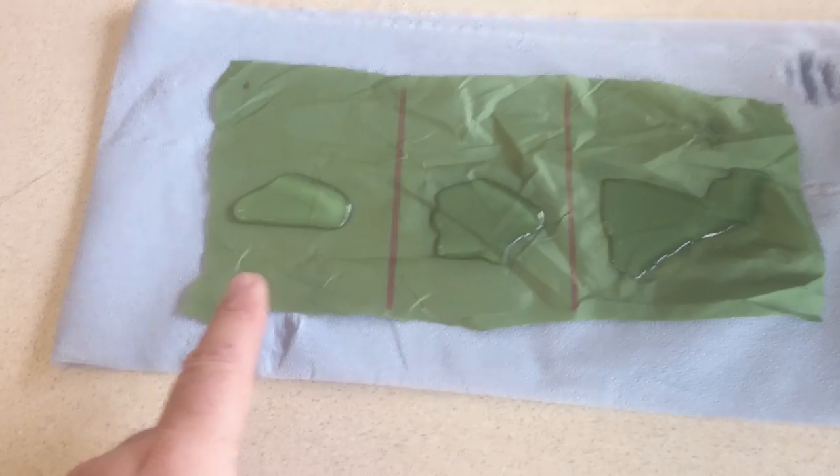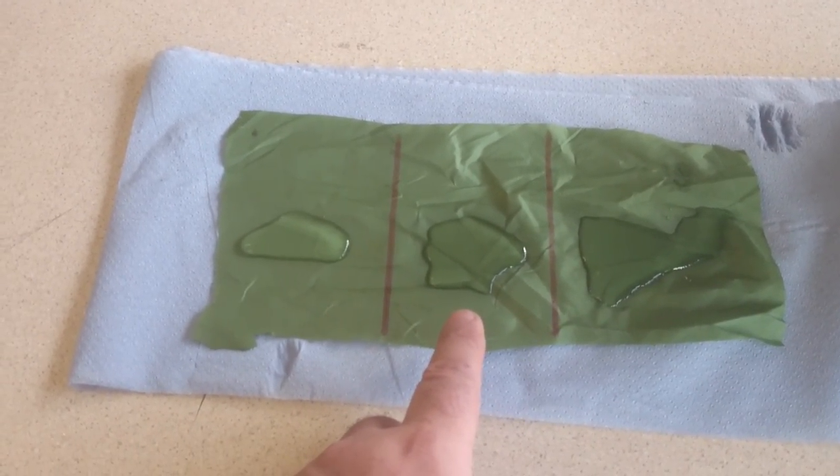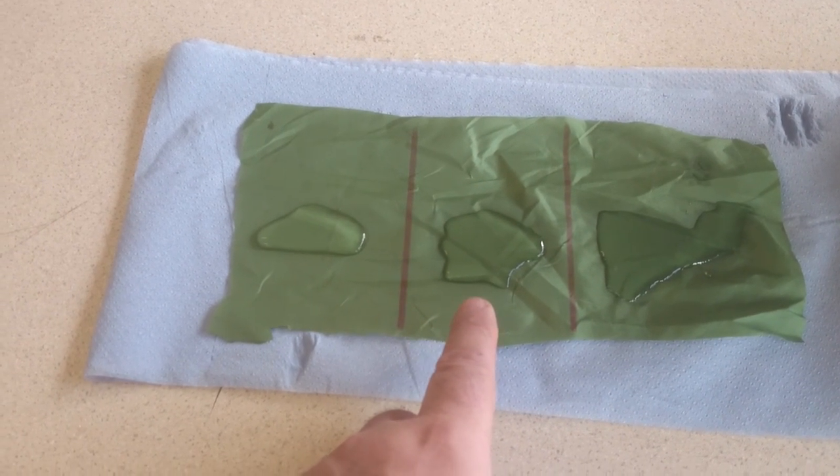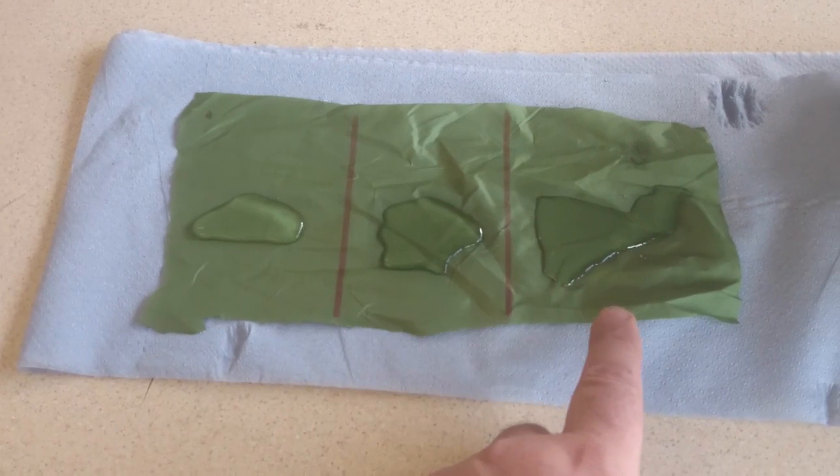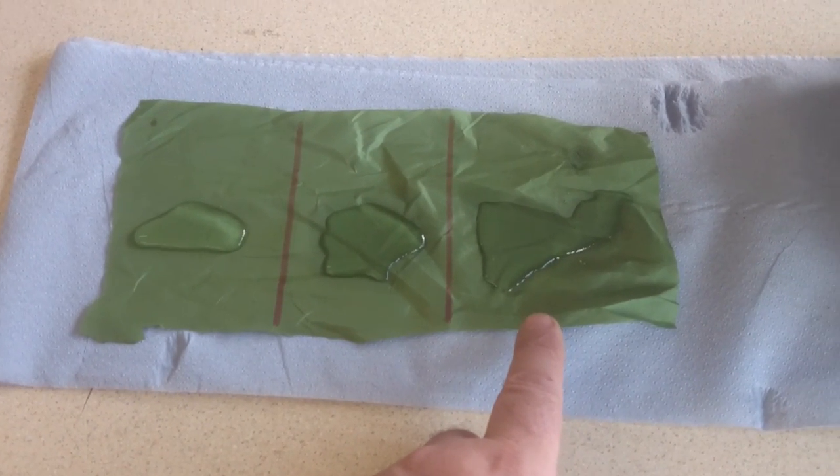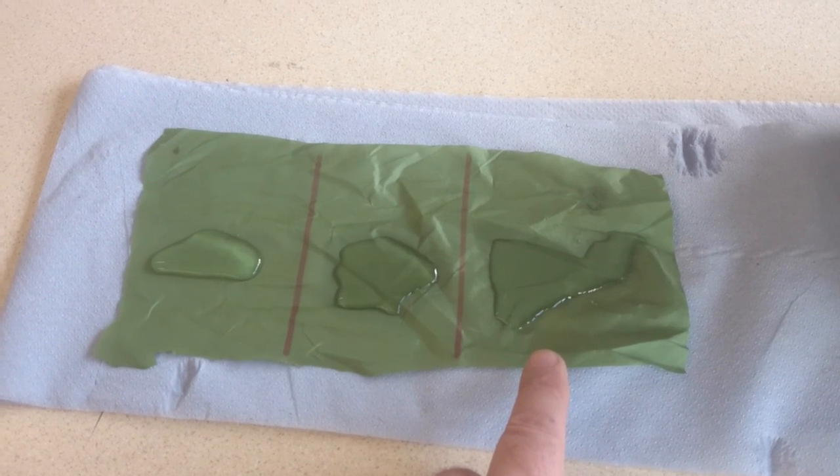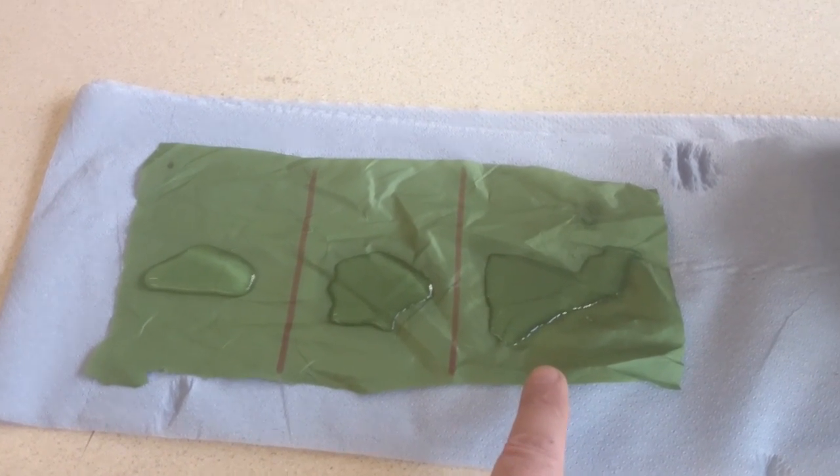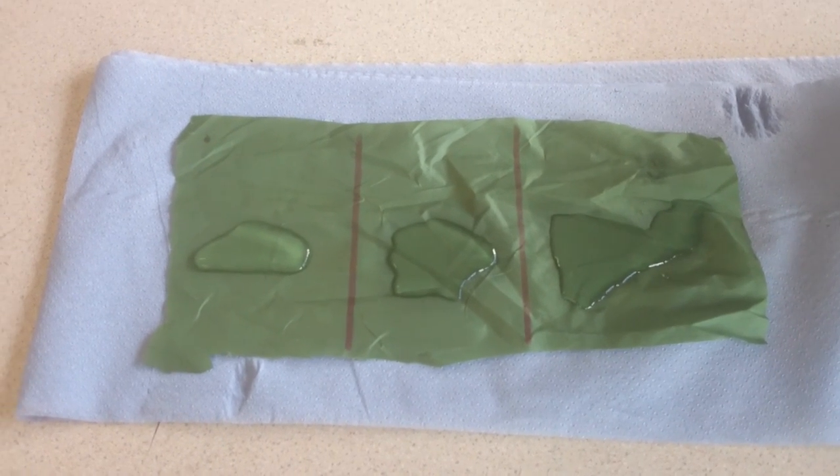So this one here is as it was. This one was washed with fairy liquid and then washed out with fresh water. This one here was washed with fairy liquid, again mild solution, and then cleaned with fresh water but then also sprayed. And we've poured some water onto the fabric.